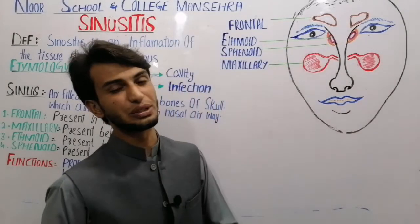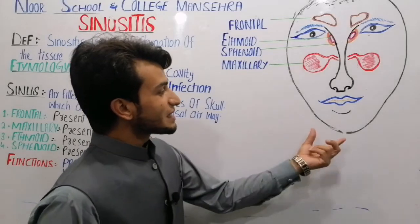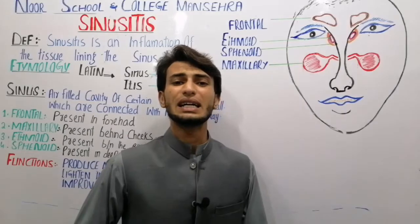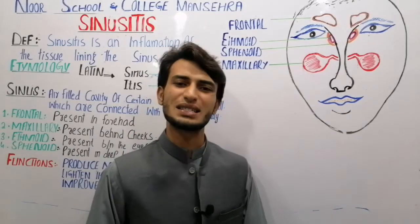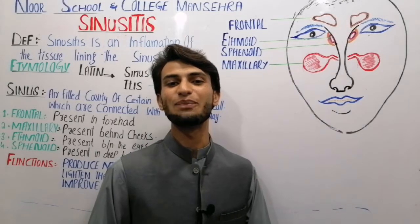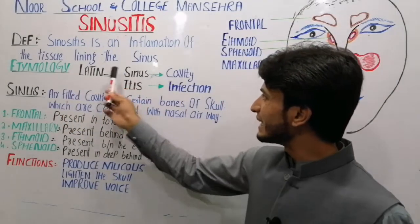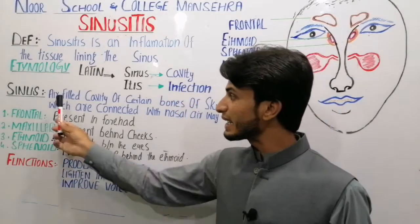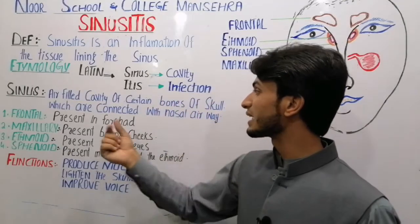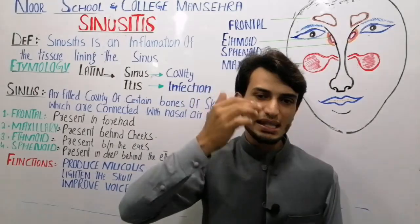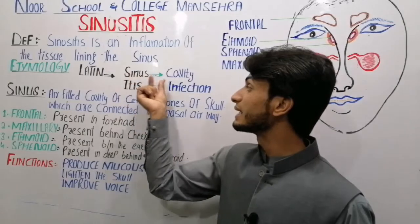اب sinus کیا ہے؟ Body کی skull bones میں small cavities یا air-filled spaces ہوتے ہیں، ان cavities کو اصل میں sinus کہتے ہیں. کیونکہ sinus Latin word سے derived ہوا ہے جس کا مطلب ہوتا ہے cavity. Sinus کیا ہے؟ Air-filled cavity of certain bones of skull which are connected with nasal cavity. ان air-filled cavities کو اصل میں sinus کہتے ہیں.